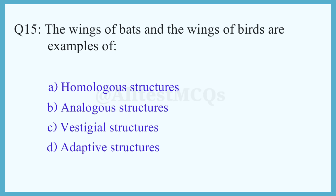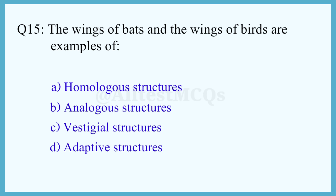Q15. The wings of bats and the wings of birds are examples of? The correct answer is option B: Analogous structures.